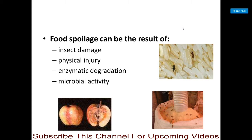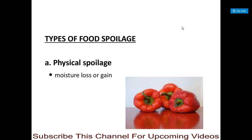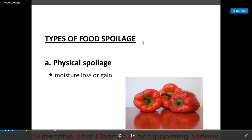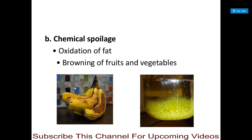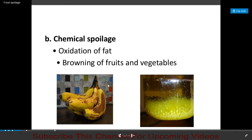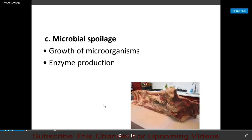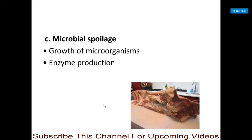Types of food spoilage include: physical spoilage, which involves loss or gain of moisture; chemical spoilage, which is due to oxidation of fat or browning of fruits and vegetables; and microbial spoilage, which is due to the growth of microorganisms or the production of enzymes in the food material.